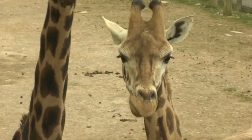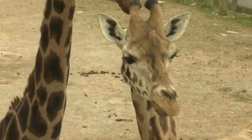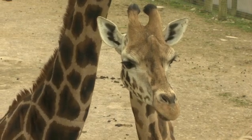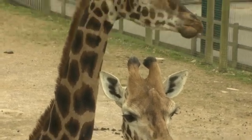Animals that eat plants are called herbivores. They have small incisors for nibbling and wide flat molars for grinding.